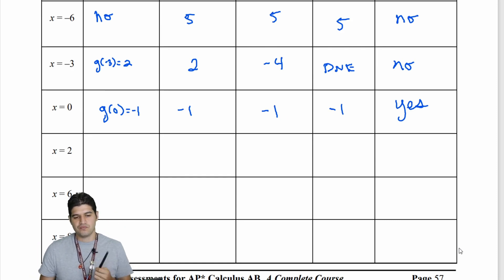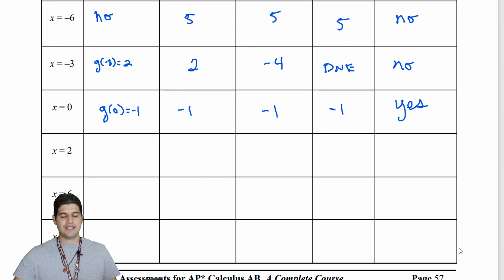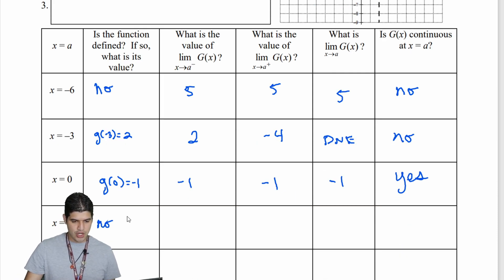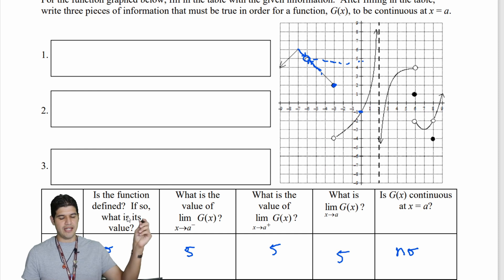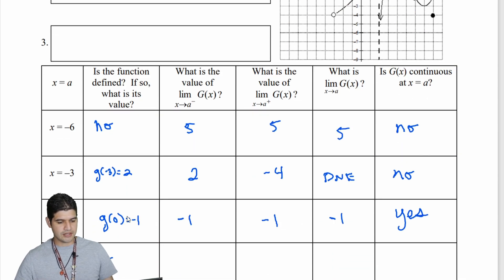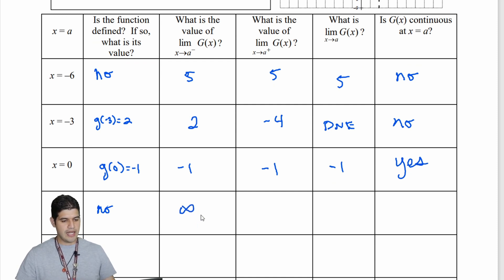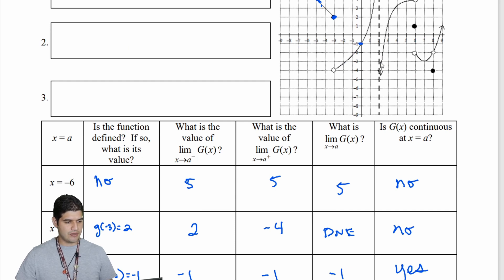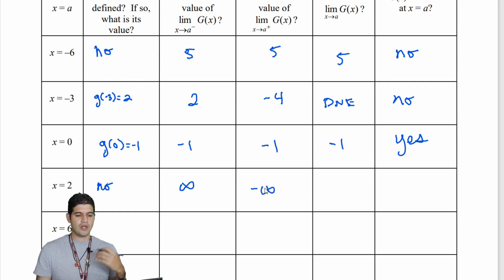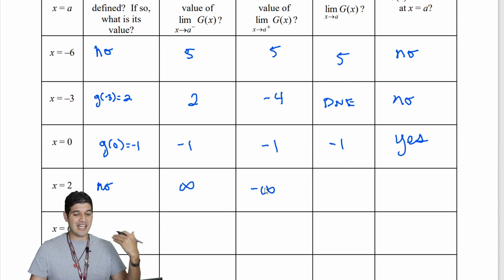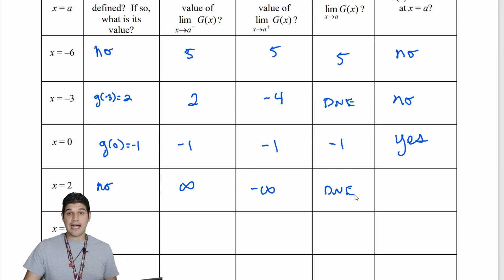Let's explore x equal to 2. The function is undefined there — we have a vertical asymptote. What's the limit as x approaches 2 from the left side? The graph is going up, so it's approaching positive infinity. From the right side, the graph is going down, approaching negative infinity. Since those aren't matching up, the limit of g of x as x approaches 2 does not exist, so g of x is not continuous at x equal to 2.